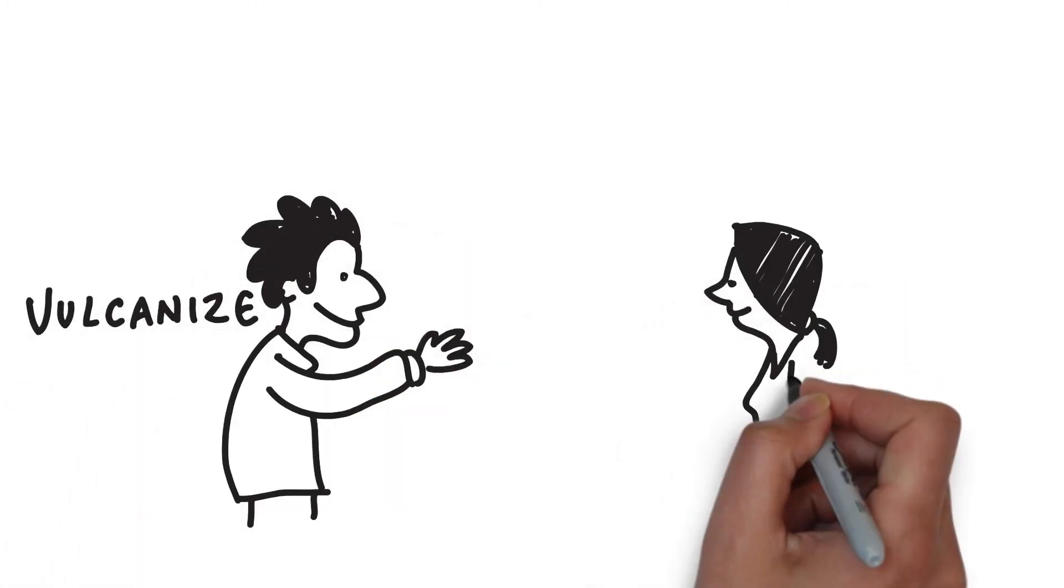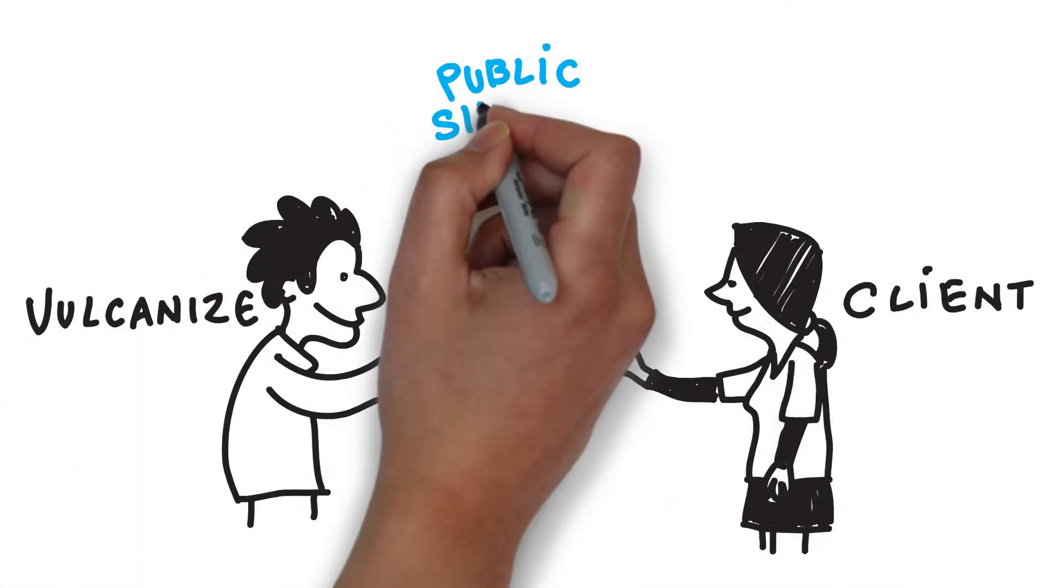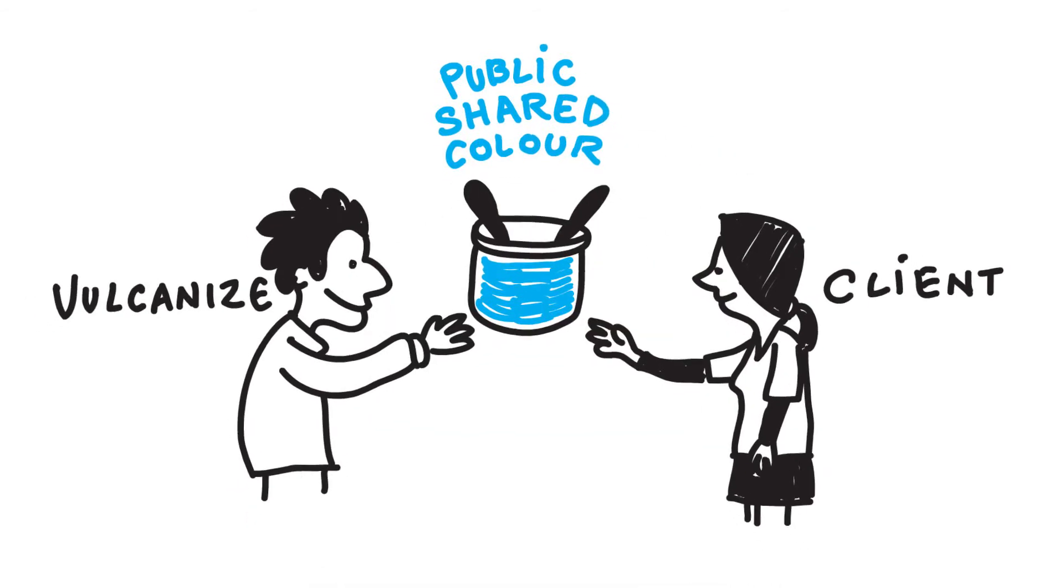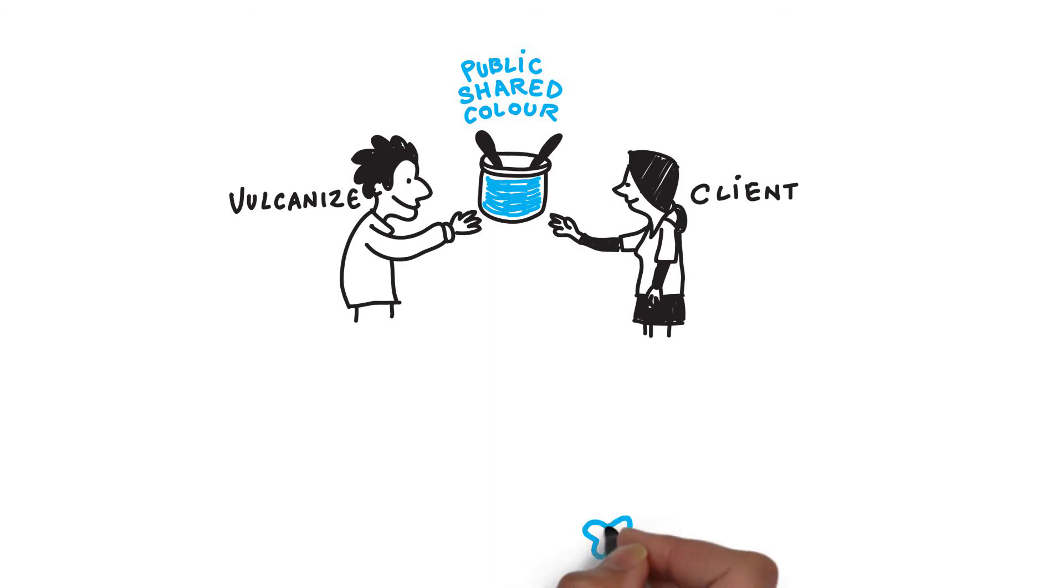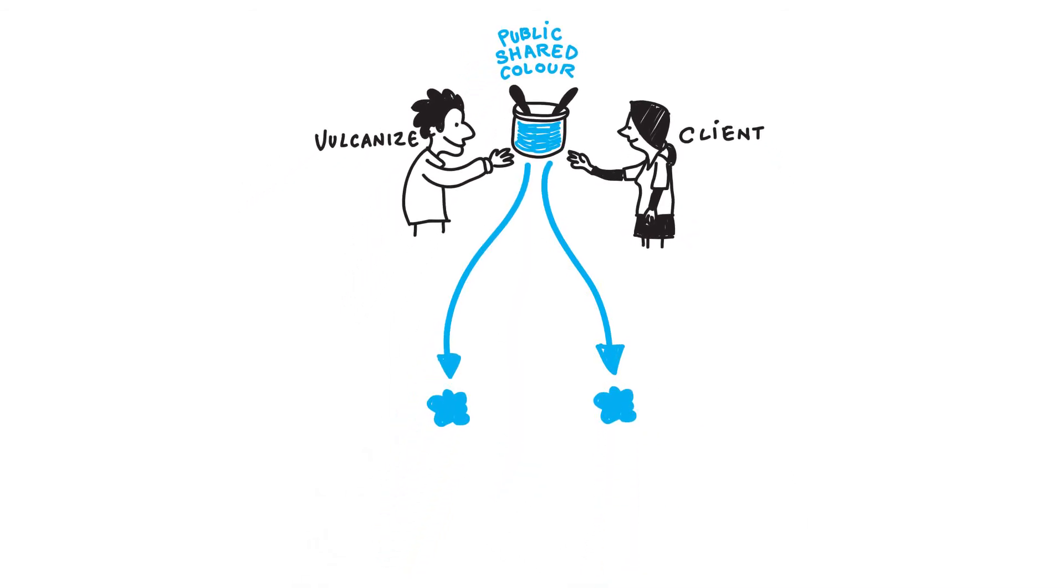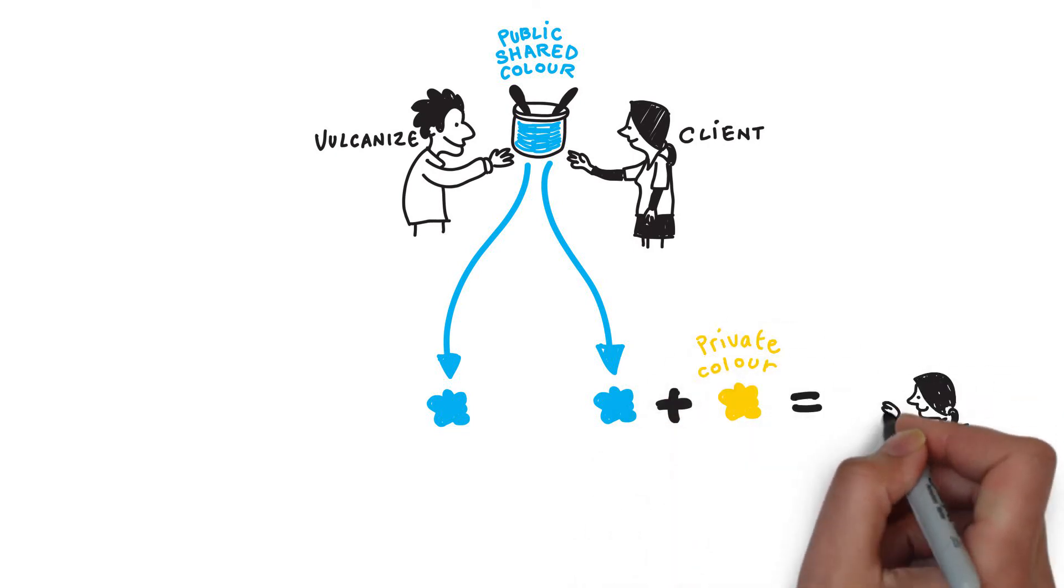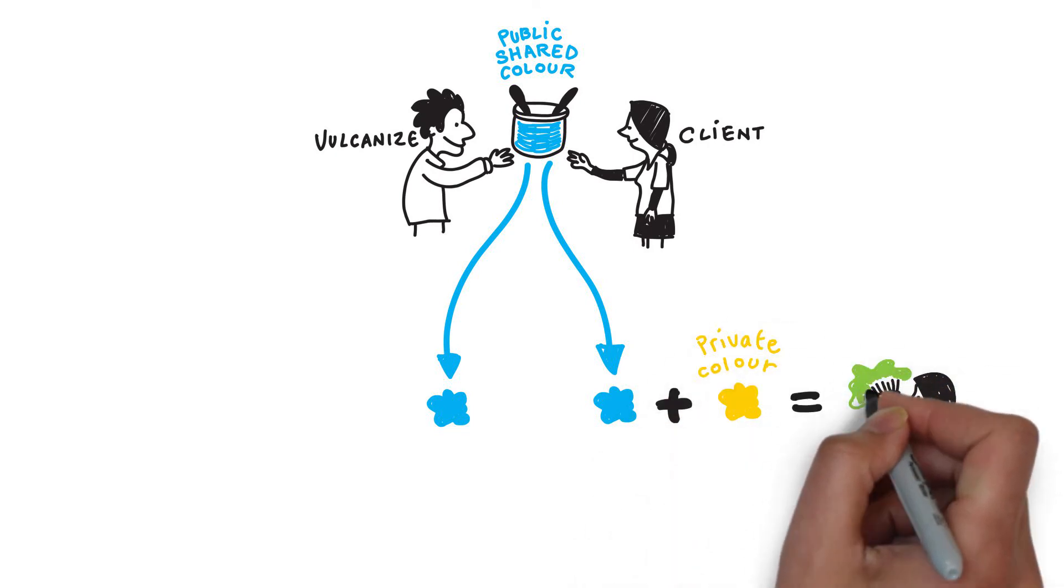Vulcanize has been assigned the public key, a very specific shade of blue. The client asks to see Vulcanize's public key, so Vulcanize sends the public blue color. The client then mixes this shade of blue with their own random private color, shown here as yellow, to give, in this example, a specific shade of green.